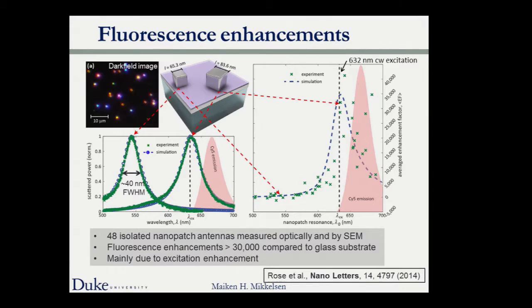We see a strong dependence on plasmon resonance wavelength, with very large fluorescence enhancements when close to the excitation and absorption wavelengths — enhancements greater than 30,000, much larger than the previously observed maximum of about 1,300. We measured 48 isolated nano antennas, correlating each with SEM measurements of size and shape. The main factor driving this is that we are more efficiently exciting the structure, with an excitation enhancement of a few thousand when we overlap the plasmon resonance with the excitation wavelength.